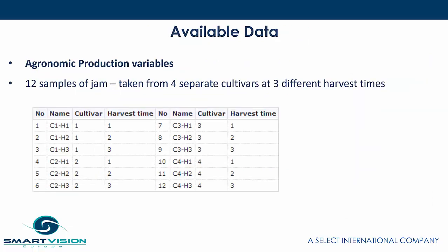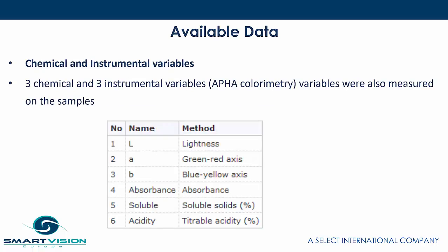Looking at the data we have available, there are some variables that refer to the agronomic production — in other words, when the harvest for the different raspberries was taken. There are three different harvest times and four separate cultivars, four separate plant types that were used. So in this dataset we have 12 samples of jam, four separate cultivars, and three different harvest times.